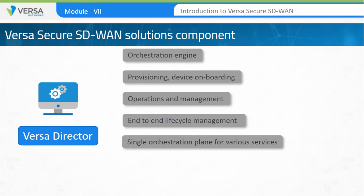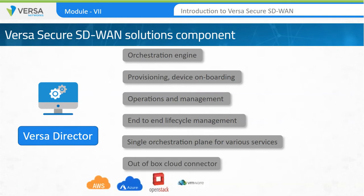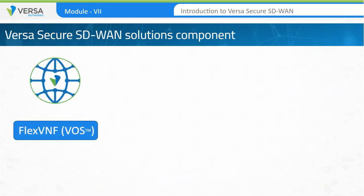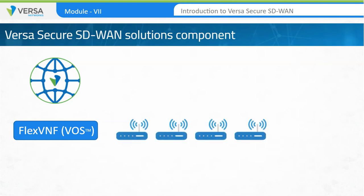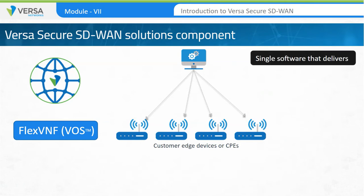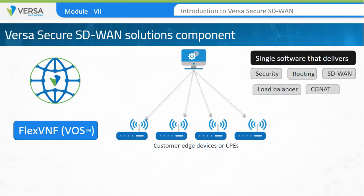Versa Director supports cloud connectors towards AWS, Azure, OpenStack, Versa Flex VNF, and others for automatic instantiation of cloud branches. Flex VNF is the software component that sits at the customer's edge. The Director provides configurations to the Flex VNF nodes, which provide services to the end user. Versa Flex VNF is a single software image that delivers security, routing, SD-WAN, load balancing, CG-NAT, and other services. Based on the configuration provided by Versa Director, the services are instantiated and delivered to customers.